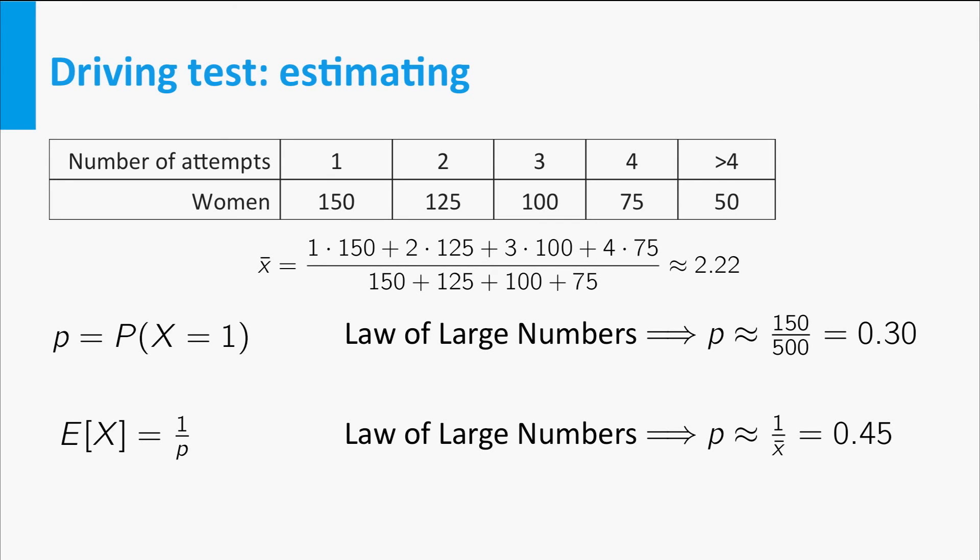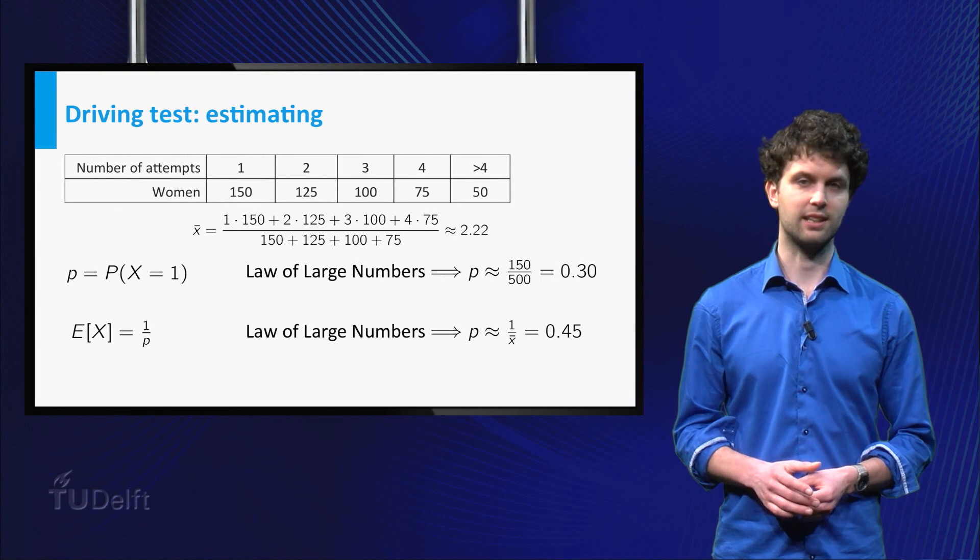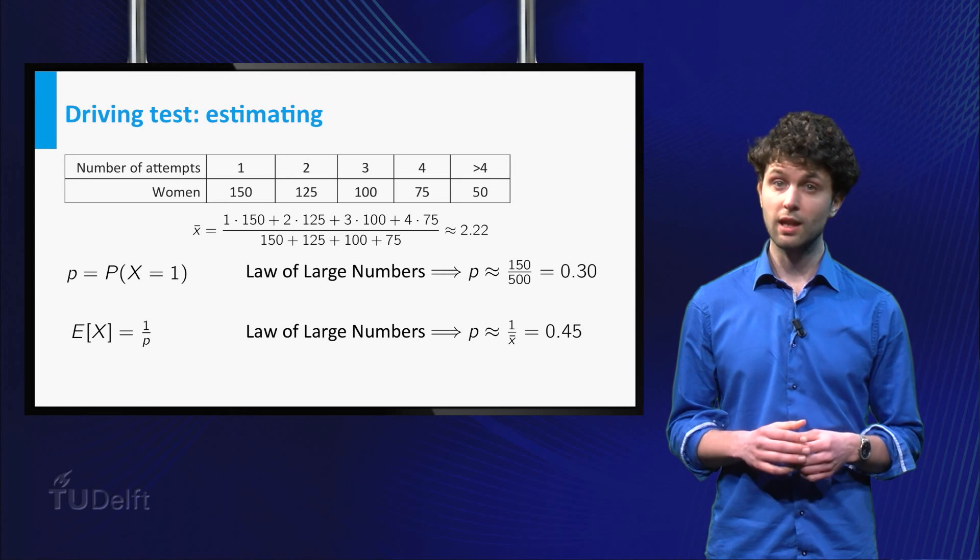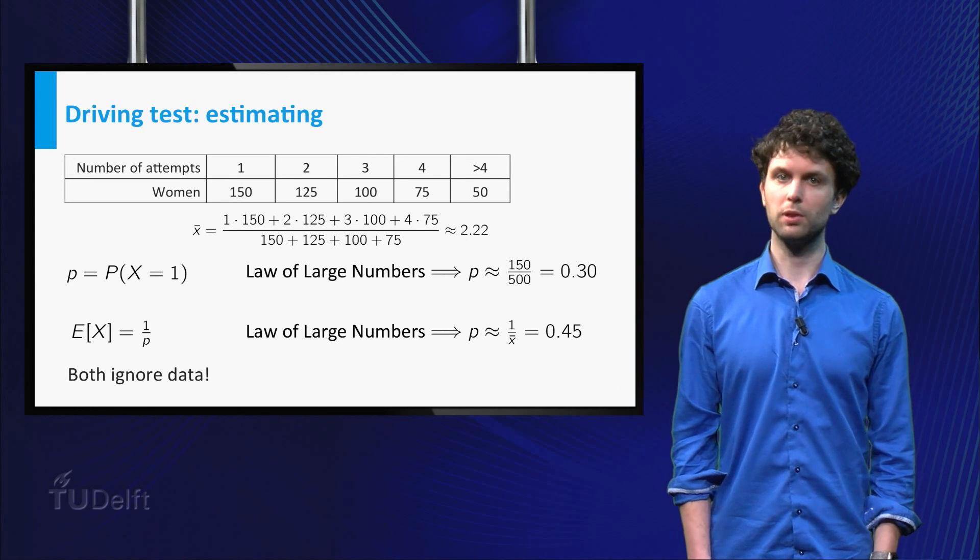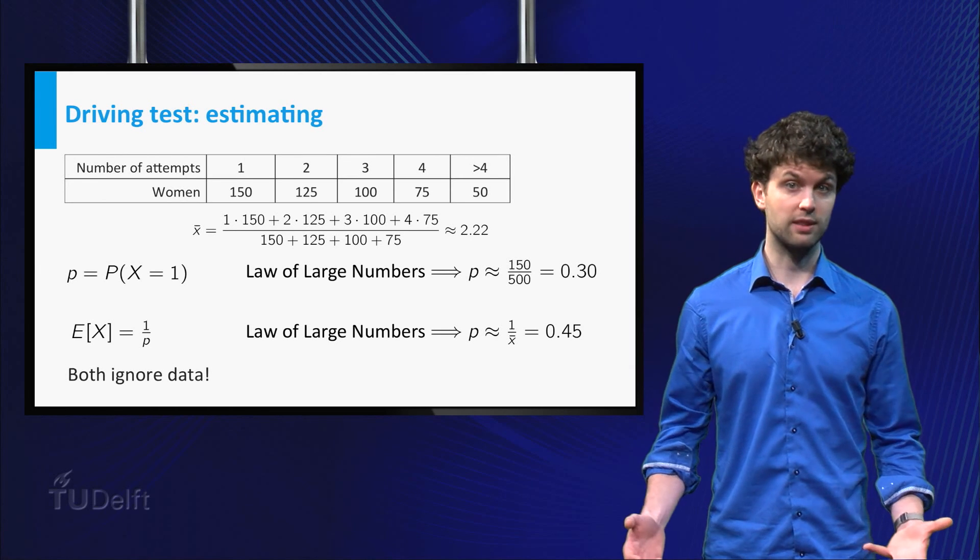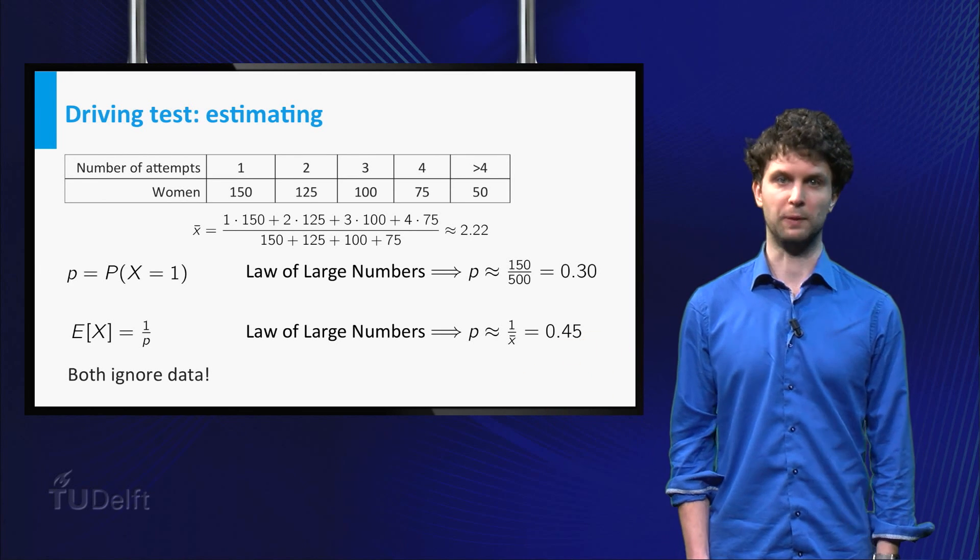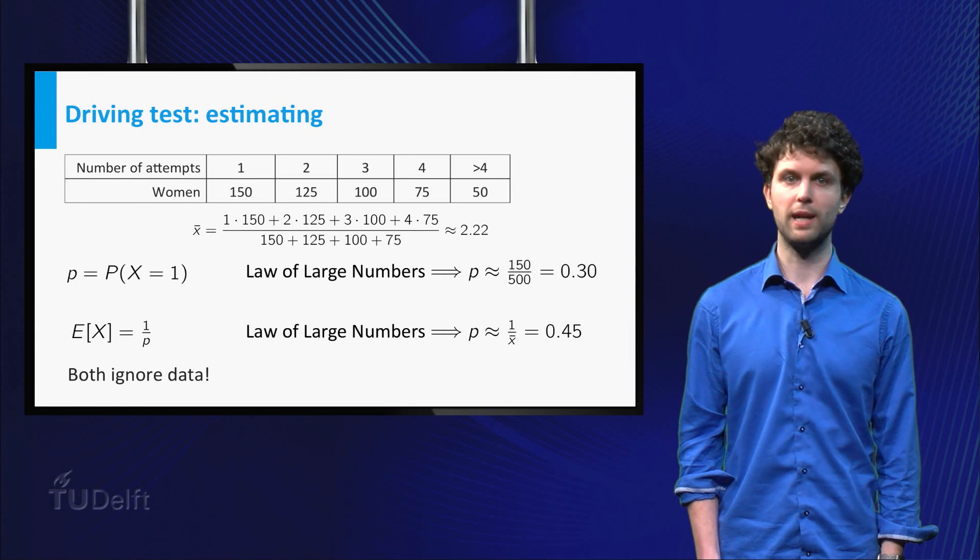Recall that the expectation of a geometric distribution is 1 over P. So again, the law of large numbers suggests to use 1 over the sample mean as estimate for P. However, you will have to ignore the last column in order to compute this average. So this method overestimates P, since it leaves out the women who need more than 4 tries to pass.